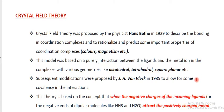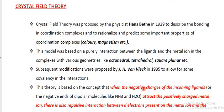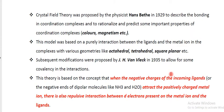This proposed theory had some changes or modifications by Van Vleck in 1935 in order to allow for some covalency in the interaction — that is, in order to prove certain covalency in the interaction.